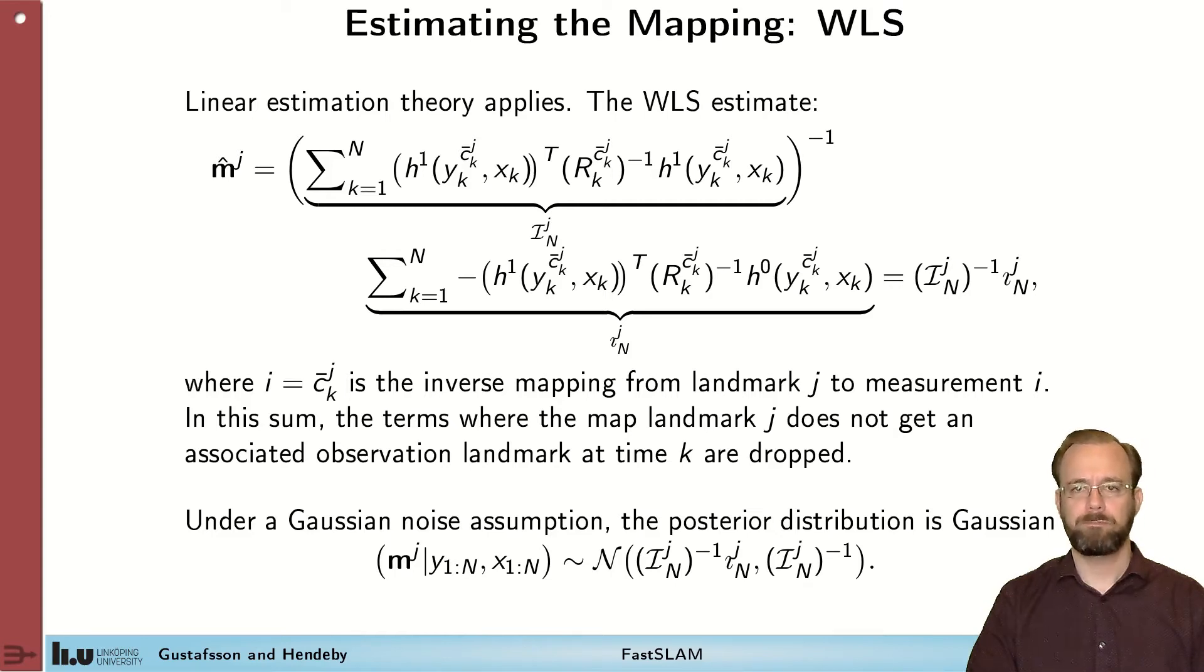And we need some association for that, but we don't consider how to do that. Also for the future, we will denote this thing here that we take the inverse of capital I, which is the information for this landmark J. And we have the second part here, which is the information state for the landmark J. We should also observe that under Gaussian noise assumptions, we can give a posterior distribution for the landmark, given the measurements and the trajectory. It's a Gaussian distribution with this mean that we compute from the weighted least squares and inverse of information for covariance.